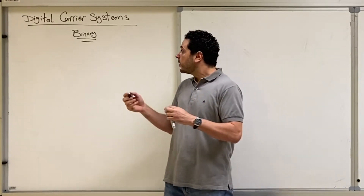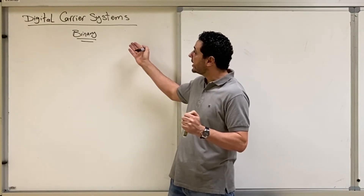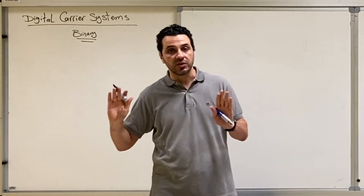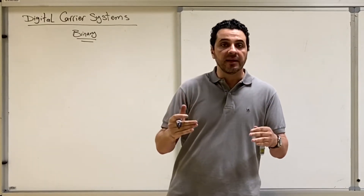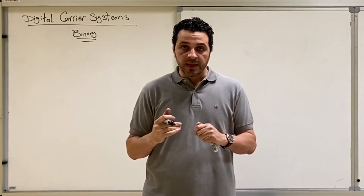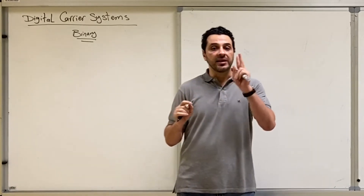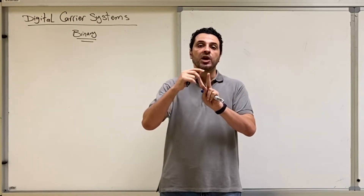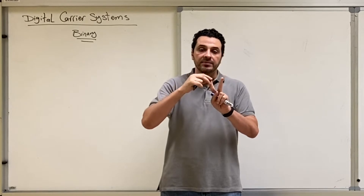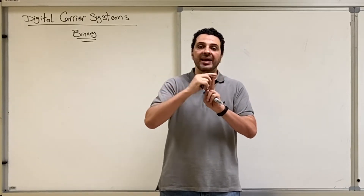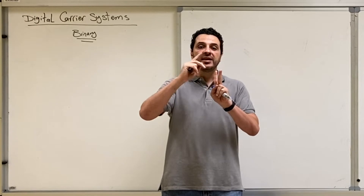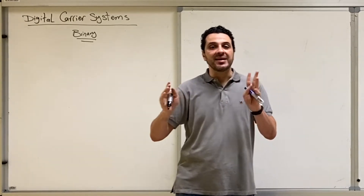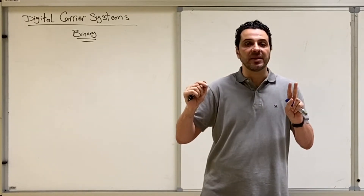Here we are going to start with carrier modulation in the digital case. We will start with the binary case first, where we have one or zero only, and then later extend it to M-level. Similar to the analog case, we have two types of modulation. We can modulate the carrier in two ways — either we do phase modulation or frequency modulation. So it's exactly the same as analog modulation, except that the naming is a bit different.